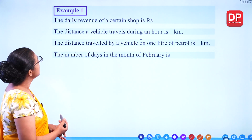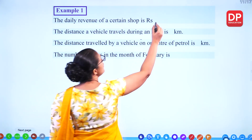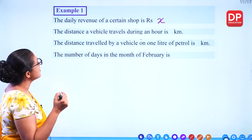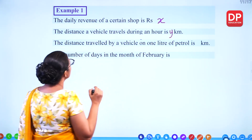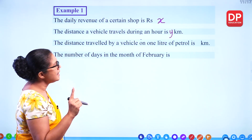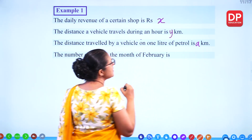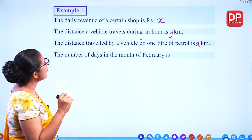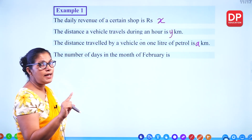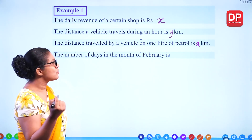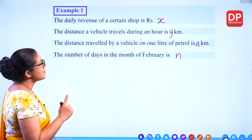Example 1 continued — variables: The daily revenue of a certain shop — we don't know, put X. The distance a vehicle travels in an hour — Y kilometres. The distance travelled by a vehicle on one litre of petrol — put A kilometres. The number of days in the month of February — it changes: leap year gives 29, normal year gives 28, so we can say N number of days. These are all variables.